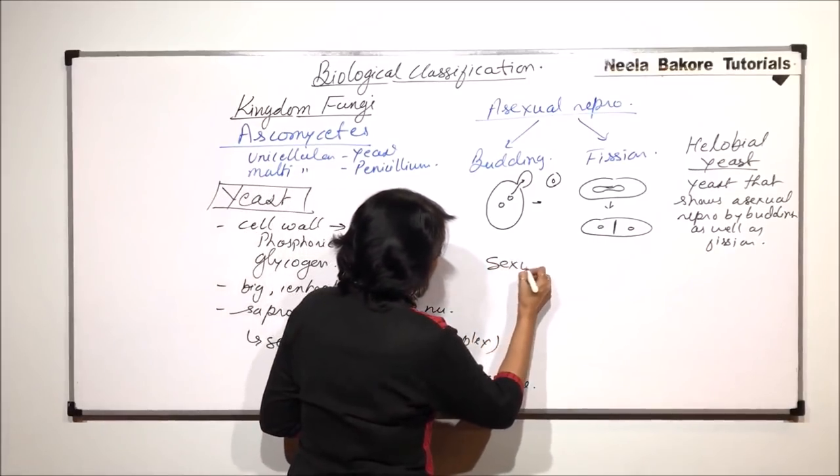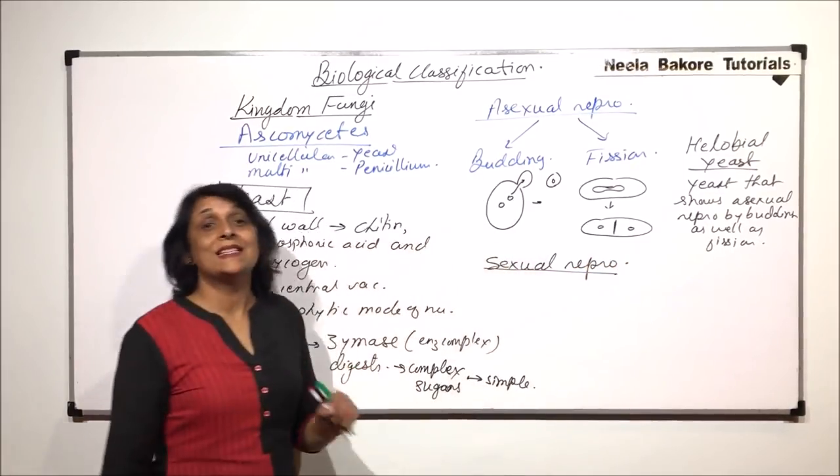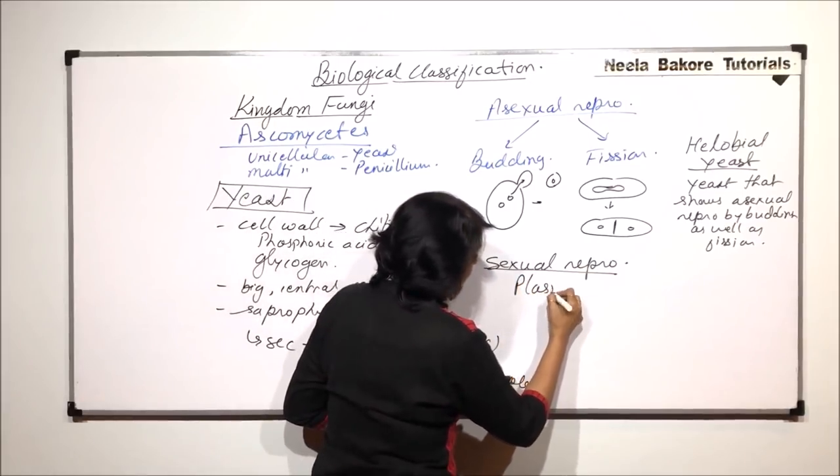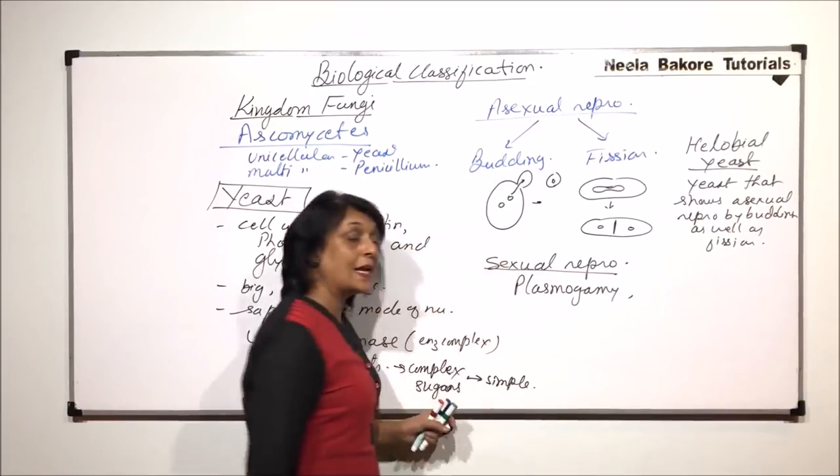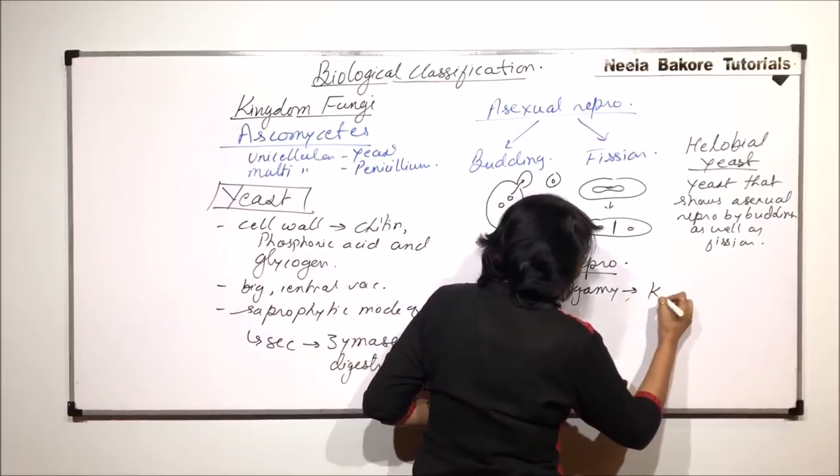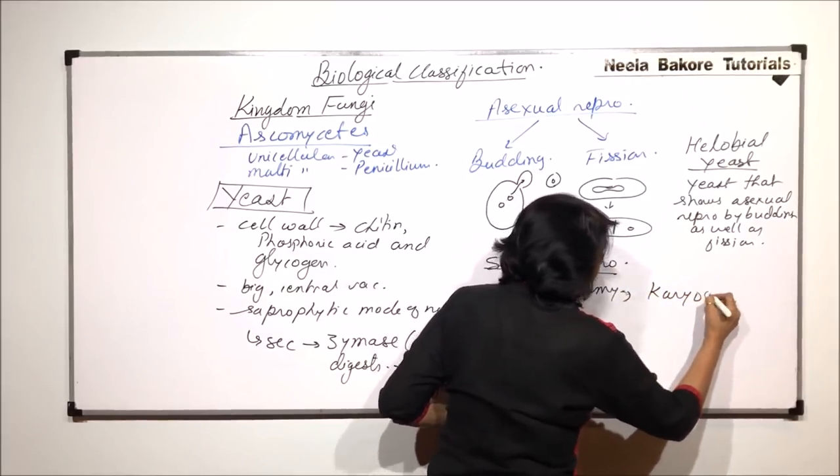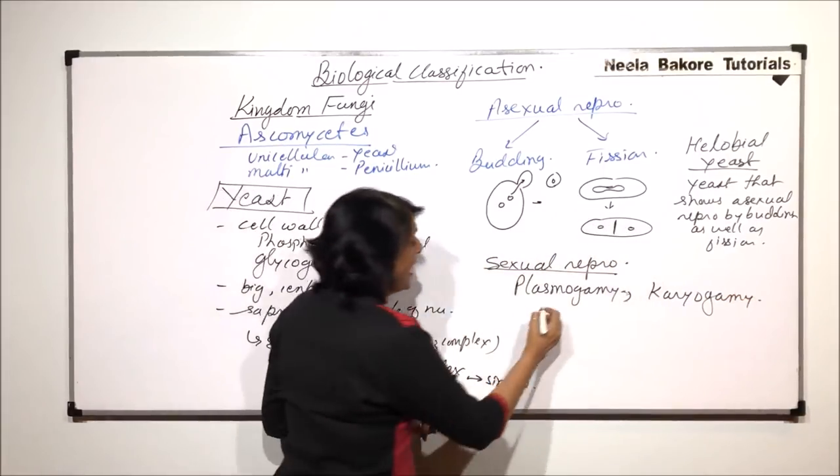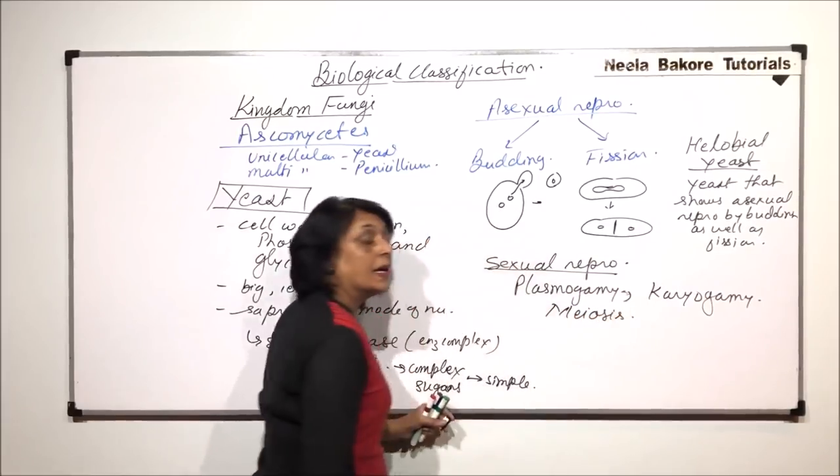Then, sexual reproduction. Sexual reproduction shows three steps. One is plasmogamy where the cytoplasmic material fuses first then followed by karyogamy or we can write them as separate steps. There is karyogamy that means the fusion of nucleus is going to take place and then there is meiosis.